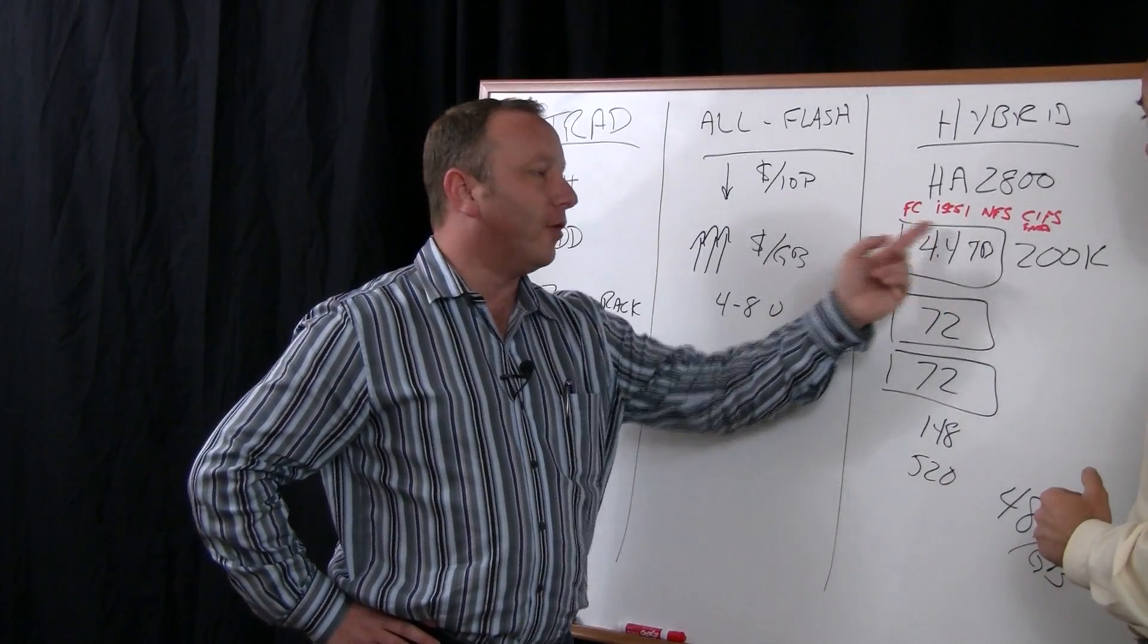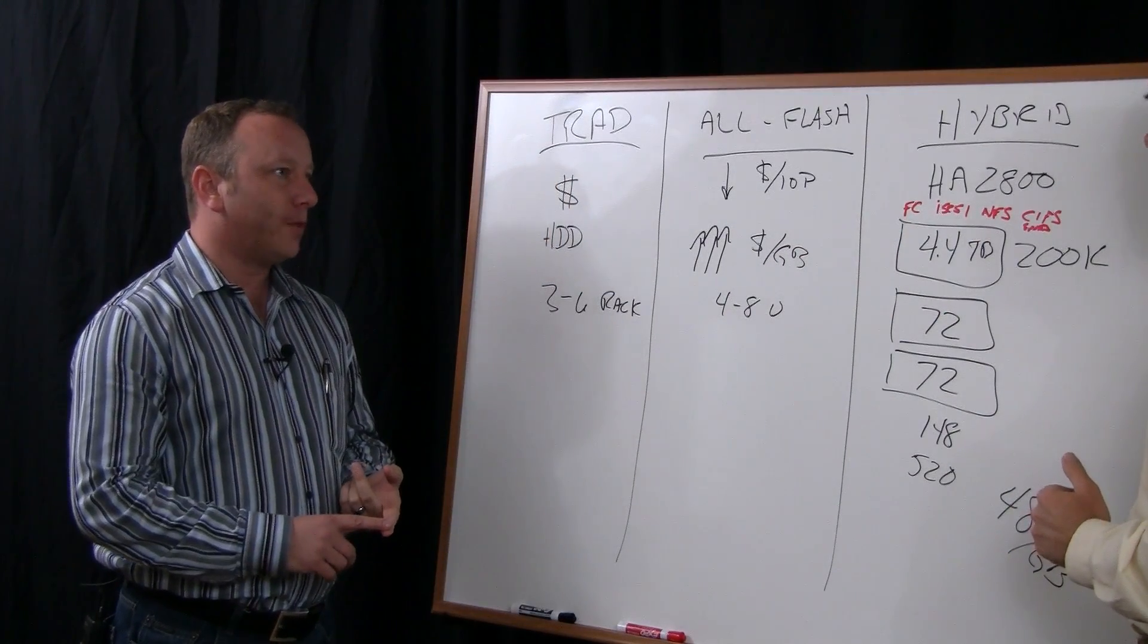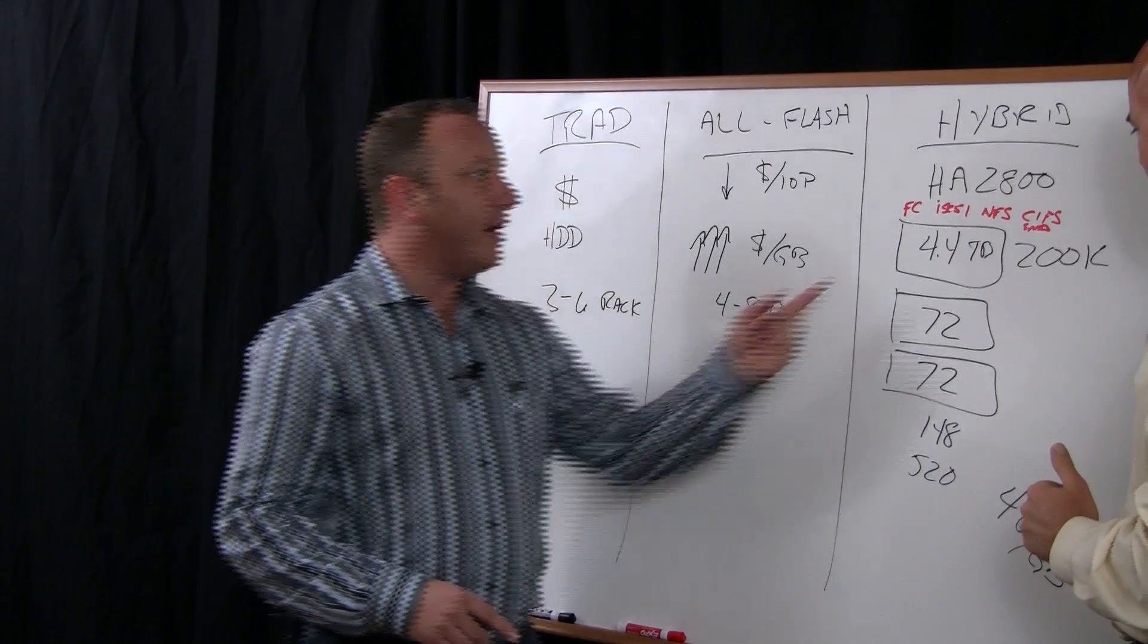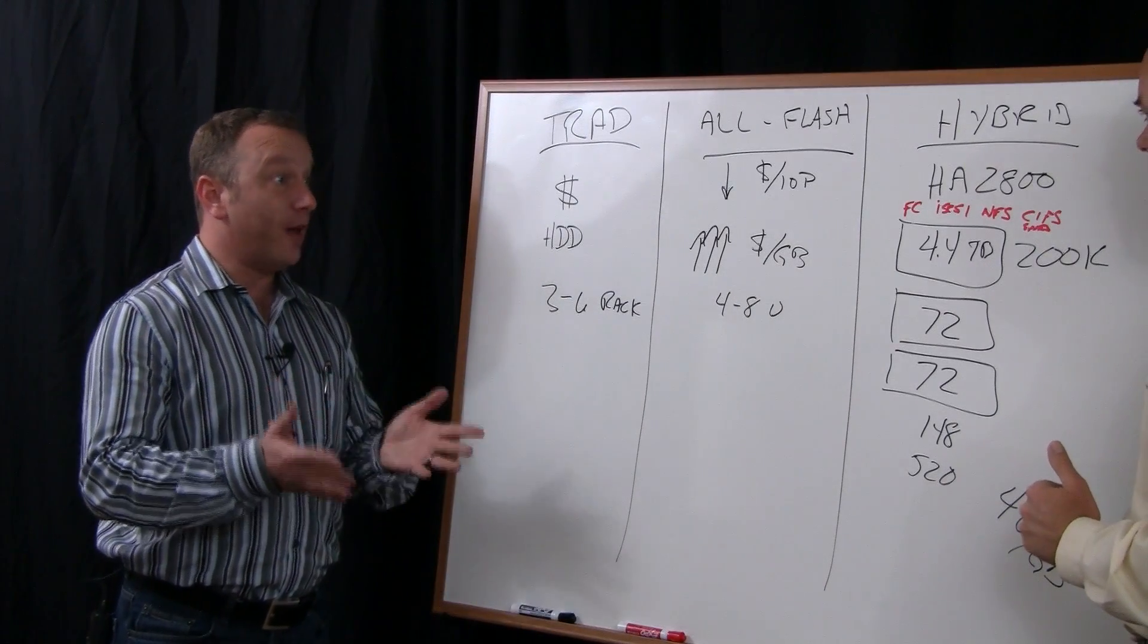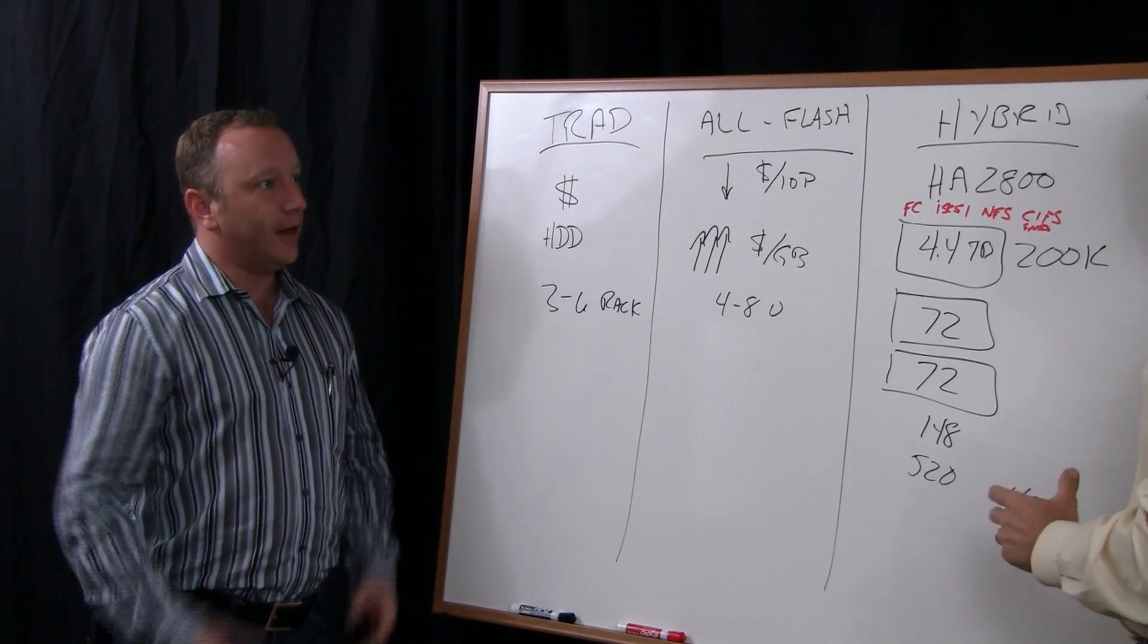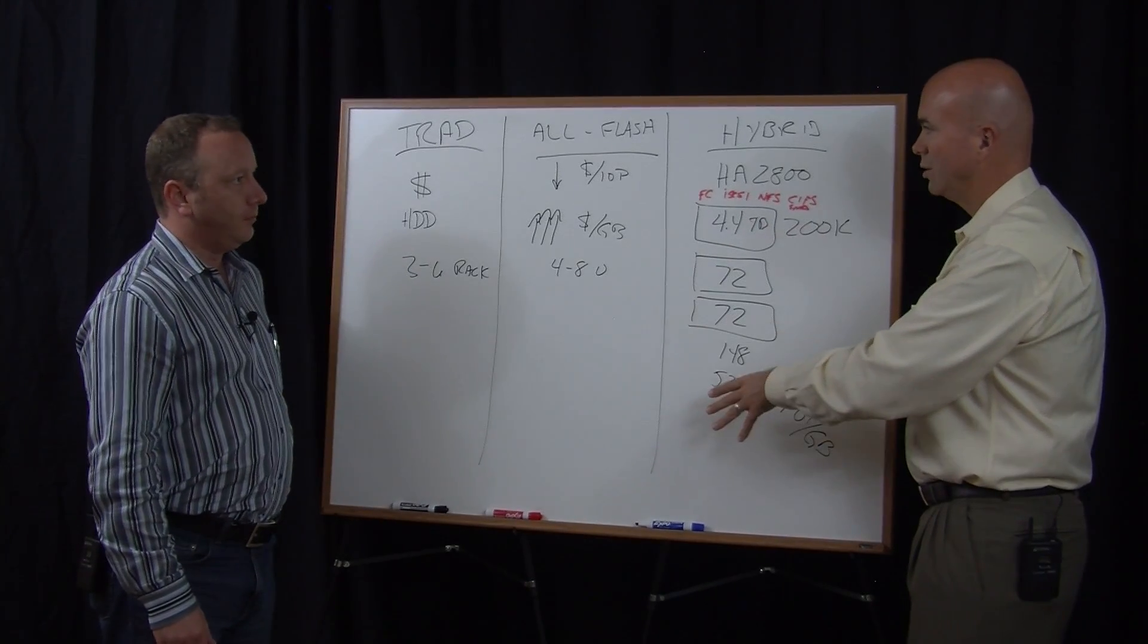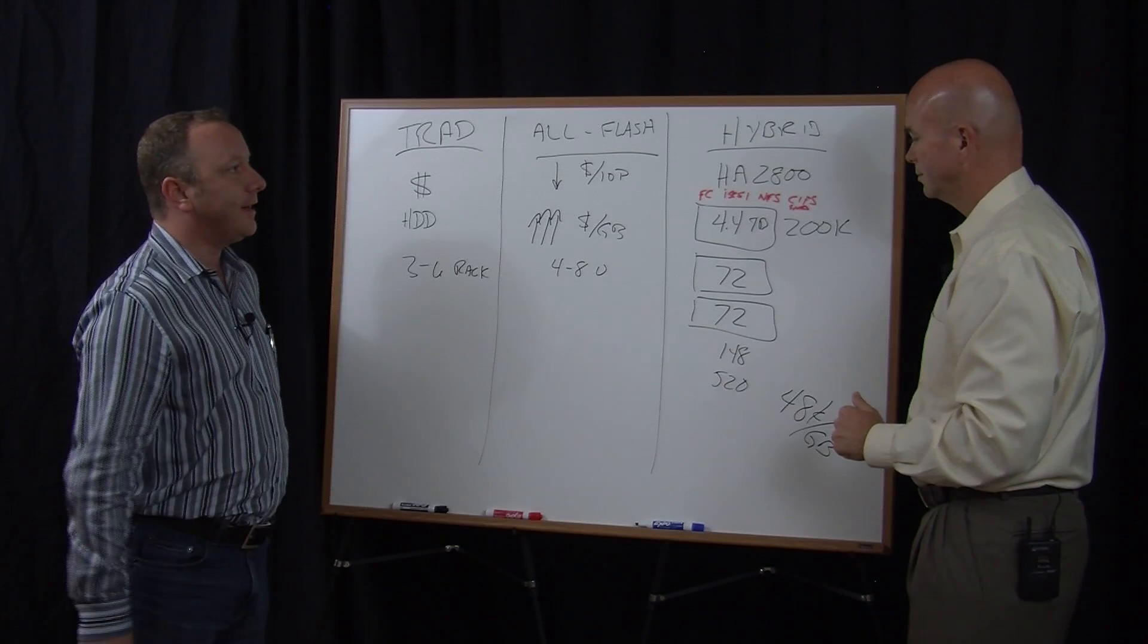Lots of our customers run a high performance block protocol to support a database or a high performance application or VM or VDI. And then right next to it, crack off an NFS file share on the same array. So you get that level of consolidation in there as well. So it gives them a lot of flexibility in how they want to use it and things like that. All resolving down to, you know, half a buck a gig now.